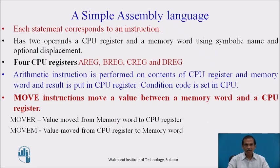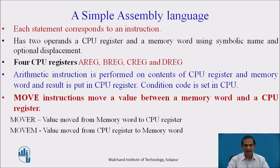We are now ready to develop a simple assembly language. Each statement corresponds to an instruction with two operands: a CPU register and a memory word using a symbolic name and optional displacement. It has four CPU registers: A, B, C, and D register. Arithmetic instructions are performed on the content of the CPU register and a memory word, and the result is put in the CPU register.